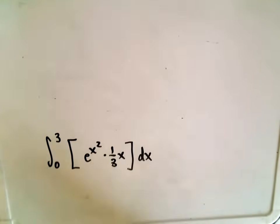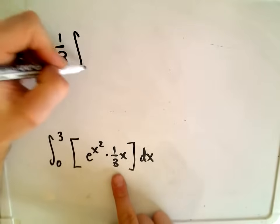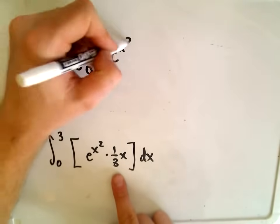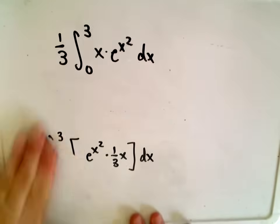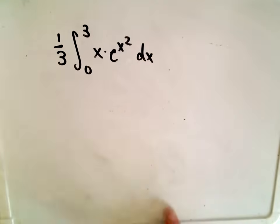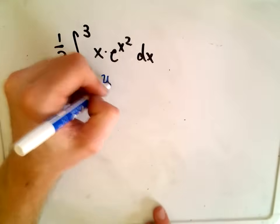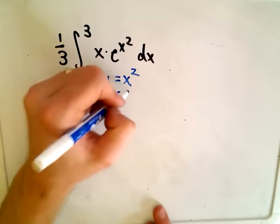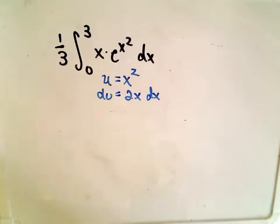Okay, so I'm going to factor the one-third out front. I like to just pull my constants out front. I'm integrating from 0 to 3. And then I'm going to write the x first, e to the x-squared dx. And now to integrate x times e to the x-squared, it's actually good we've picked up this extra x term because now we can just do a u substitution. We'll let u equal x-squared. The derivative will be 2x dx.